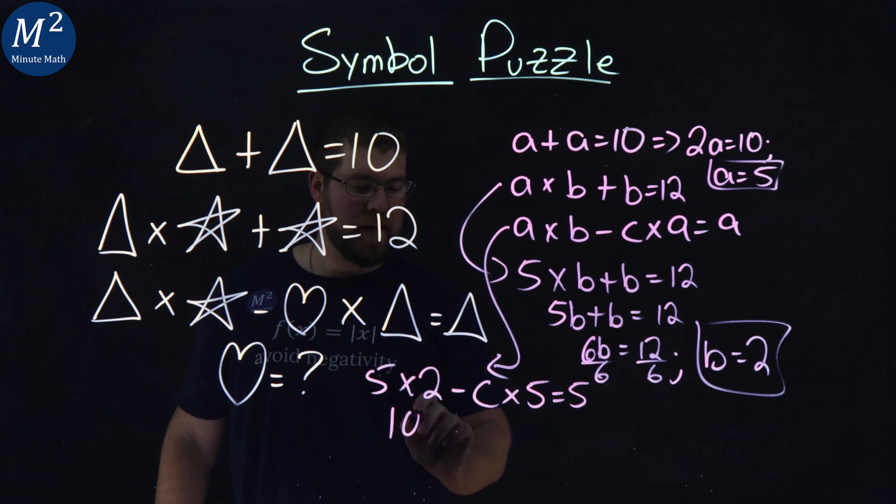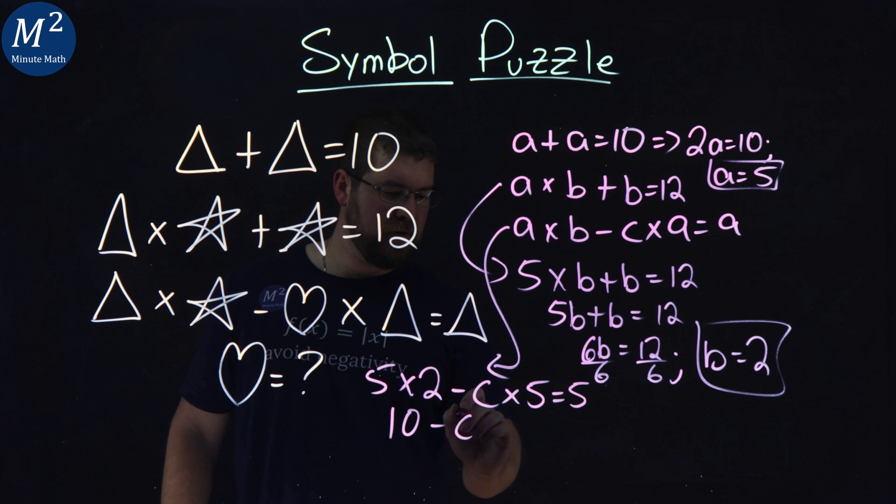Minus 5C equals 5. Subtract 10 from both sides. Negative 5C equals negative 5.